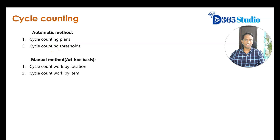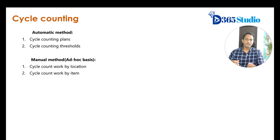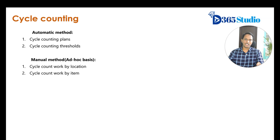The other automatic method in D365FNDO is cycle counting thresholds. Cycle counting thresholds are used to create cycle count work when stock levels meet a specific threshold. For example, if a particular item has a quantity of 10 in a specific location and it comes down to 2, that triggers a cycle counting work so the warehouse worker can easily complete the counting of that product in that location.